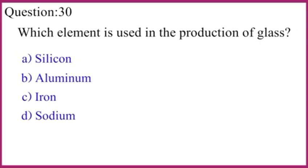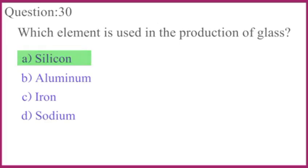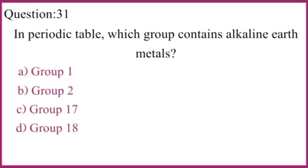Which element is used in the production of glass? The correct answer is silicon. In the periodic table, which group contains alkaline earth metals? The correct answer is group 2.